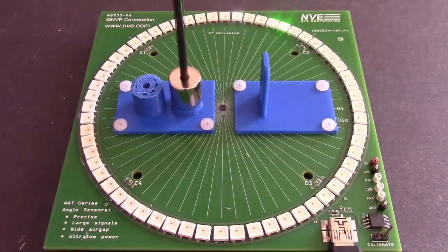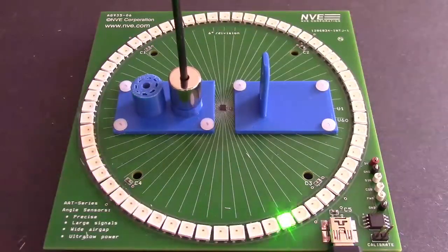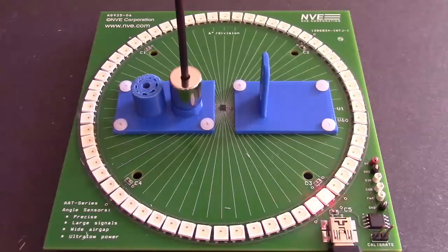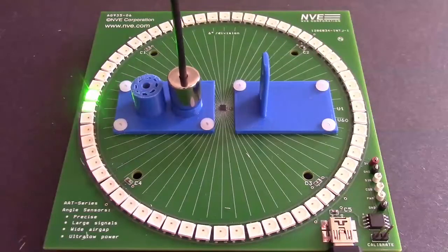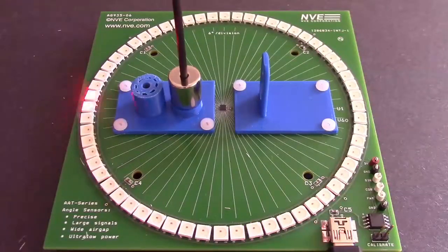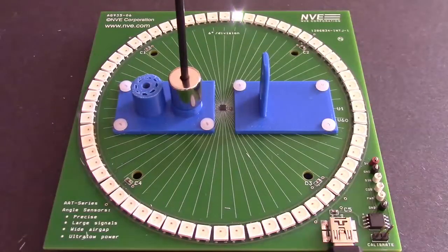You may have noticed the LED lights rotate in the opposite direction of the magnet. This is because the phase of the magnetic field is shifted by 180 degrees in the parallel plane configuration. All this means is that the sensor reads a negative angle when used in this configuration, which is easy to adjust for.